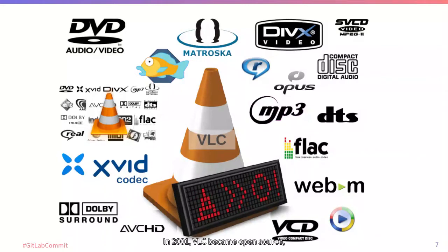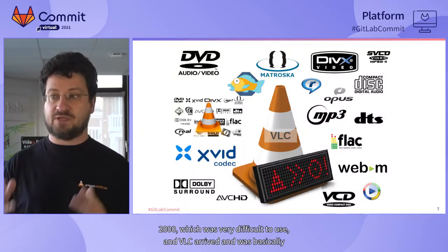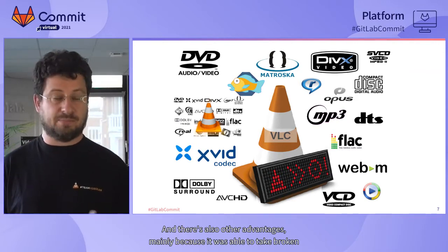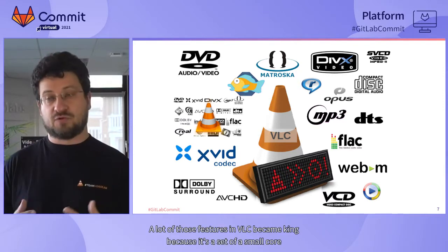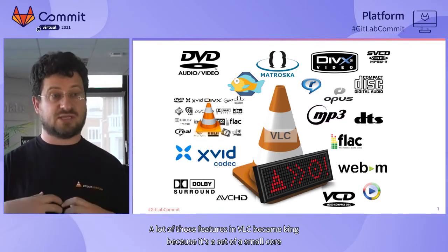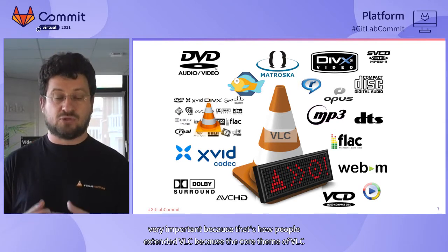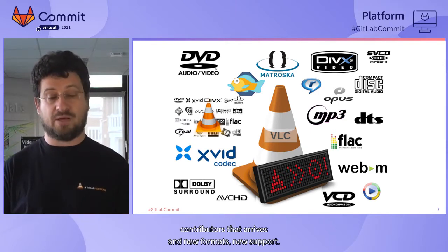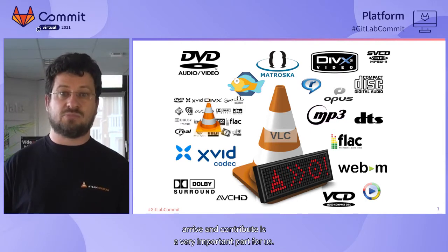In 2001, VLC became open source and it grew and grew, mostly because it was able to play any type of file, any type of video — all those codec packs that were very difficult to use in the early 2000s. VLC arrived and was basically a solution that just worked because all the codecs were inside. There are also other advantages: it was able to play broken files and run everywhere. A lot of those features came because it's a small core with a lot of plugins, which are very important because that's how people extended VLC. The core team has always been very small, but there are a lot of external contributors who arrive and add new formats and new support.